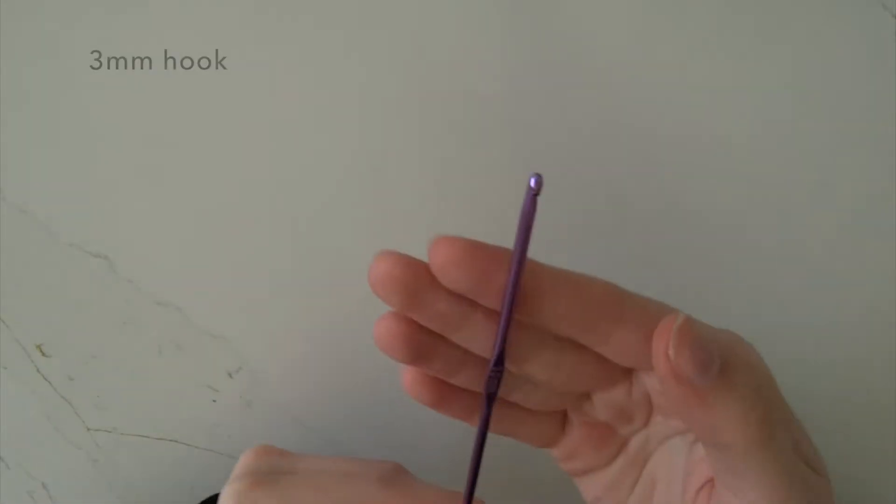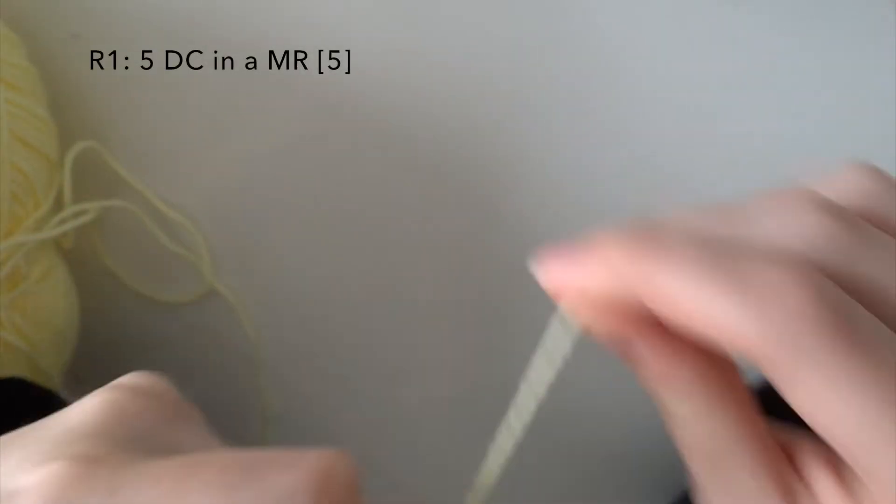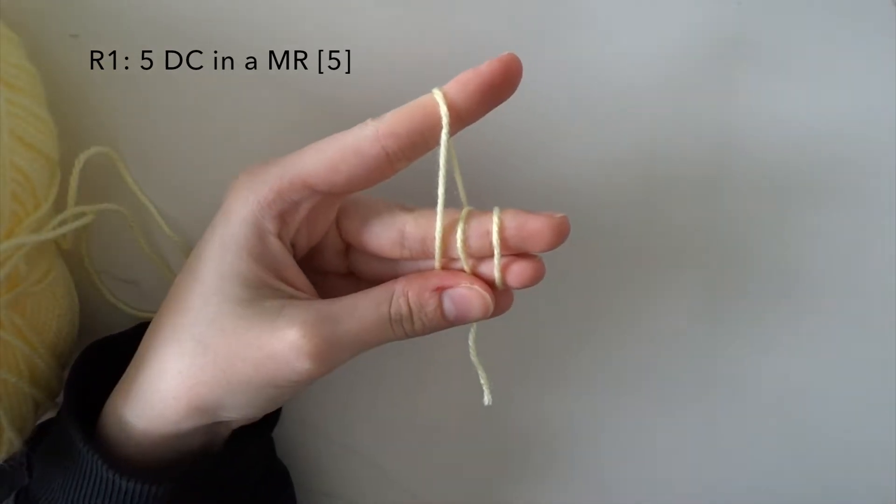For round one we start with the yellow yarn and we will do five double crochet in a magic ring.